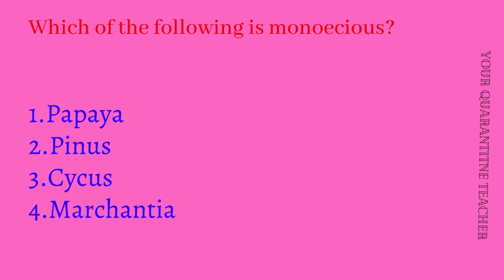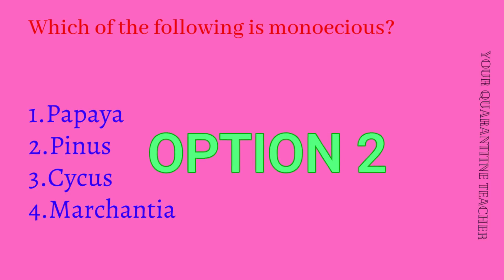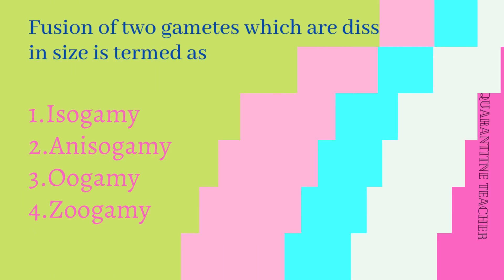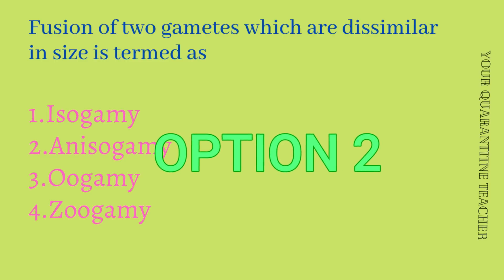Which of the following is monoecious? Option 1, Option 2 Pinus, Option 3 Psychus, Option 4 Marchantia. The answer is Option 2 Pinus. Then, fusion of two gametes which are dissimilar in size is termed as anisogamy — Option 2 is correct.